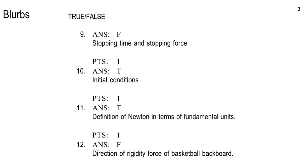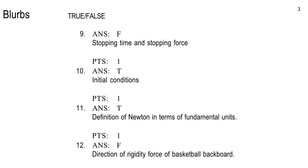Here's what the blurbs page looks like — this is questions 9 through 11 from test form B or something like that. It tells you: if you did get number 11 wrong on this test form, that was the definition of Newton in terms of fundamental units. So it tells you which items you got wrong and what the basic concept was. I don't give you the exams back or post verbatim tests on the internet, but I do give you this — a little blurb about each item.